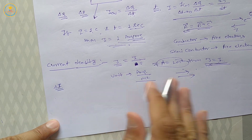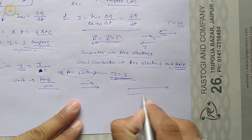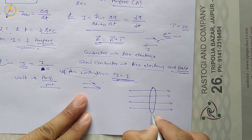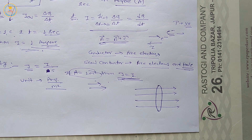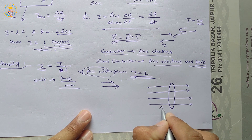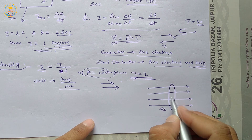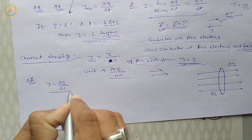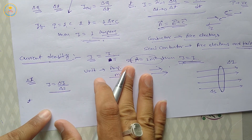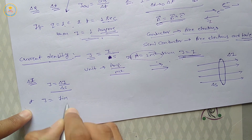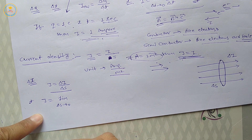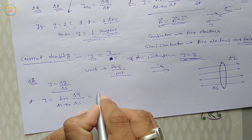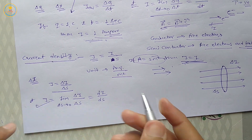If a small current ΔI flows perpendicular to a surface area, suppose a small surface element ΔS with current ΔI flowing through it, then current density J equals ΔI upon ΔS. At any instant, the instantaneous current density J equals the limit as ΔS tends to 0 of ΔI upon ΔS, represented as dI/dS.